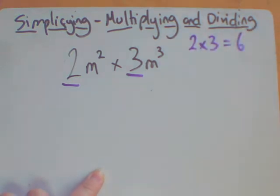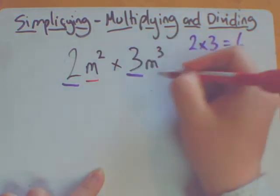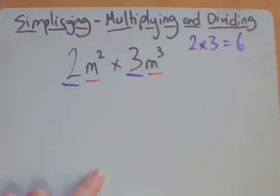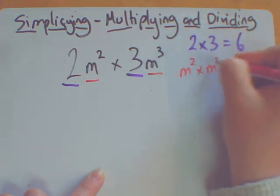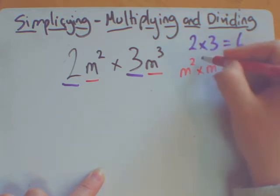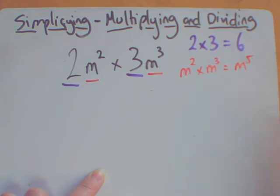The second bit I'm then going to deal with is m squared m cubed. Now, if you think back to the video on indices that we did, m squared times m cubed means actually I add these two indices together, which is going to give me m to the 5. So my final answer is the 6 that I got from there.